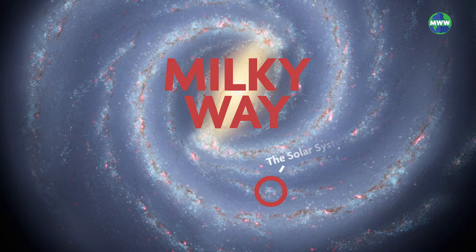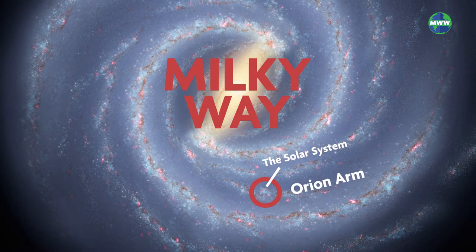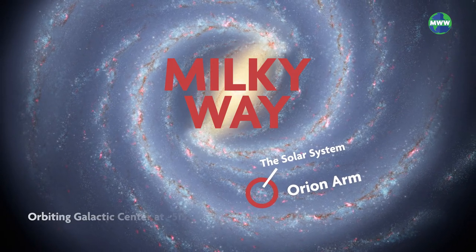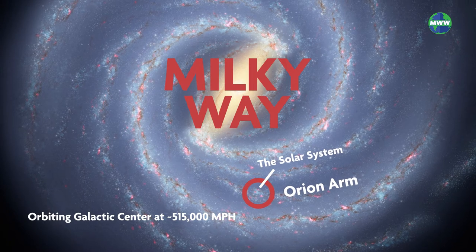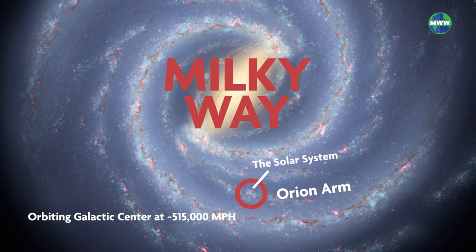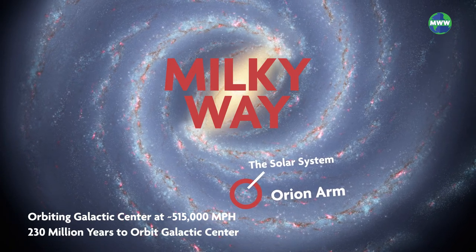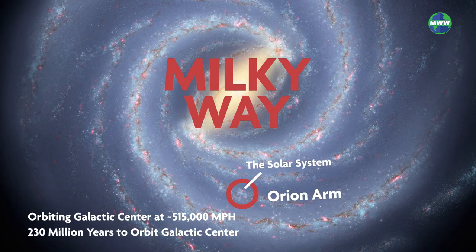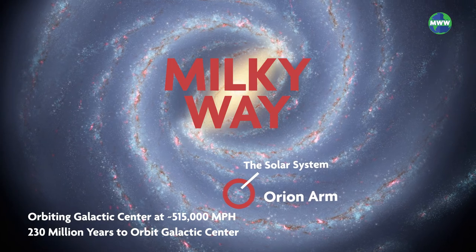The solar system is within the Milky Way galaxy in the Orion Arm, orbiting the galaxy center at nearly 515,000 miles per hour. It takes about 230 million years for our solar system to orbit one time around the galactic center of the Milky Way.